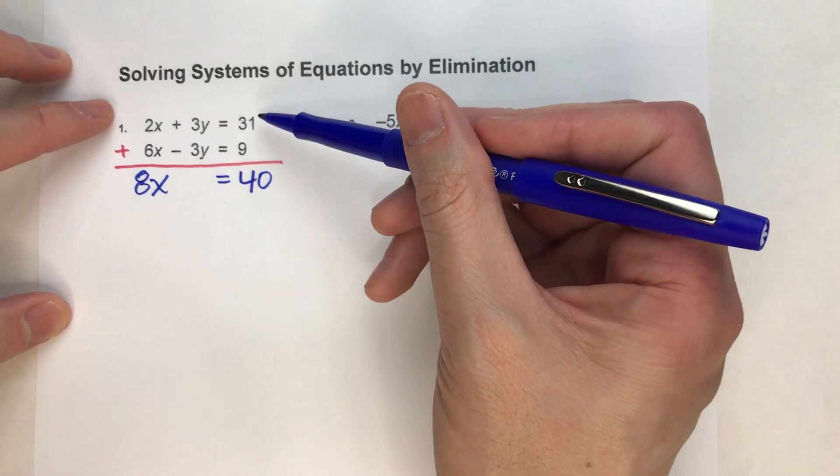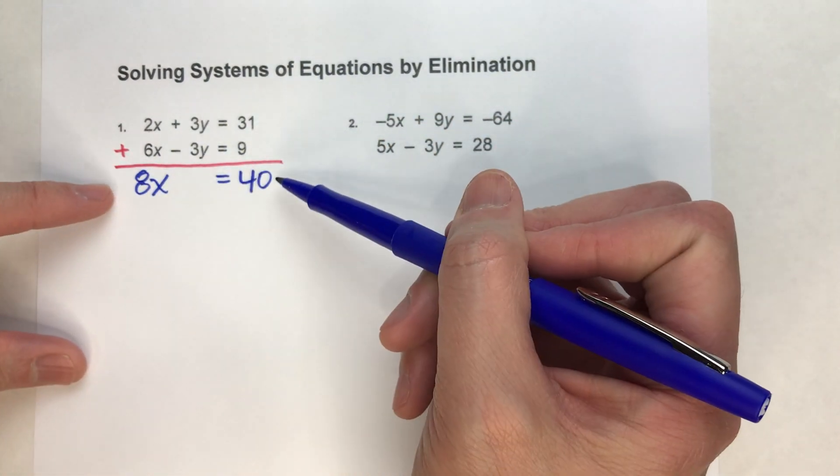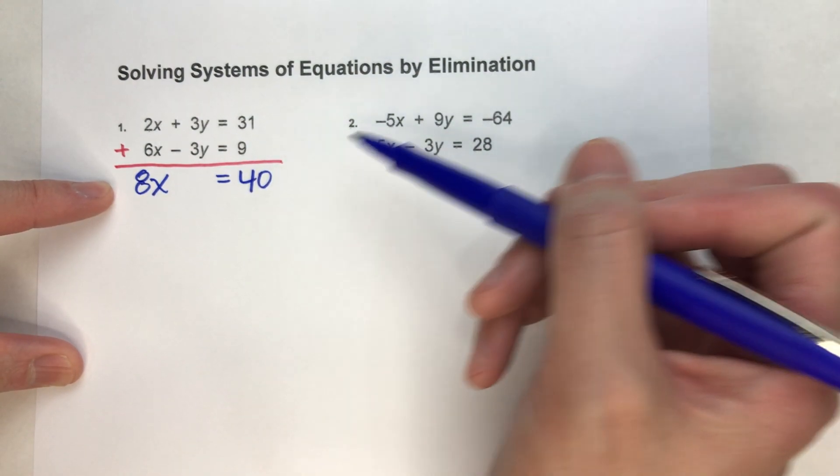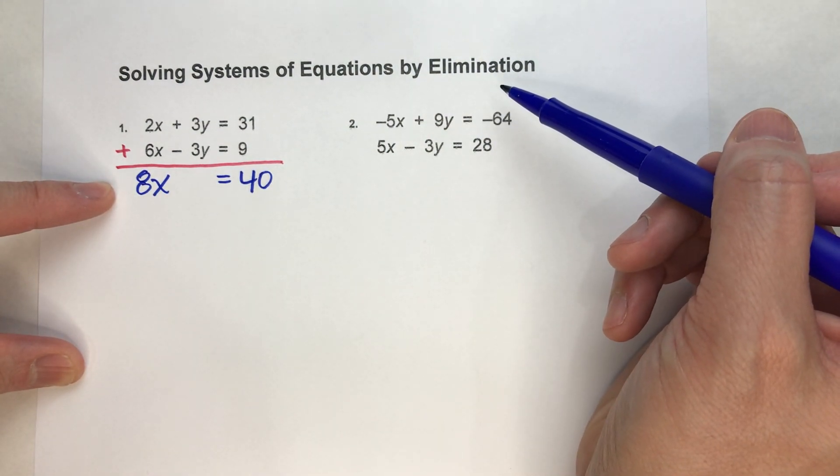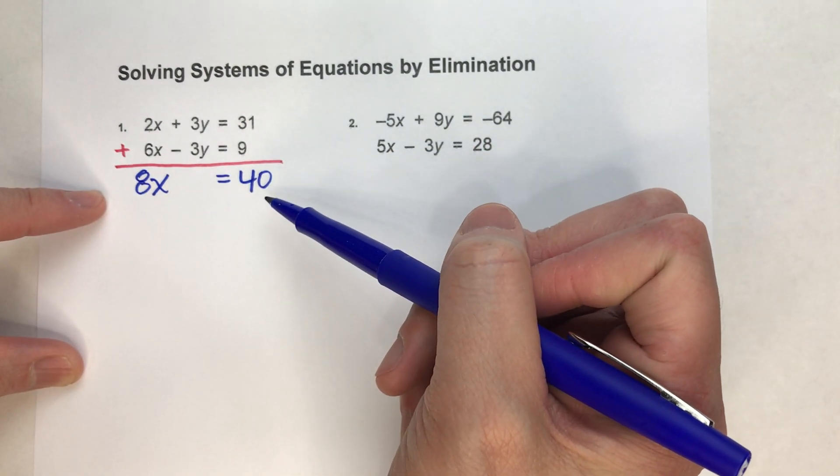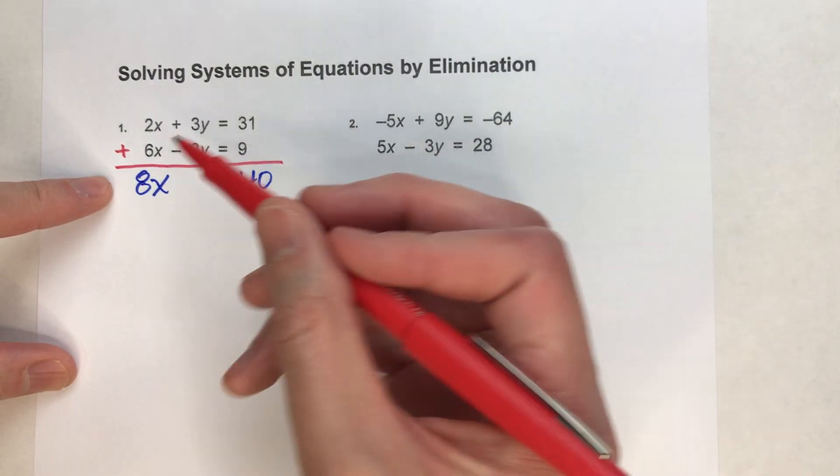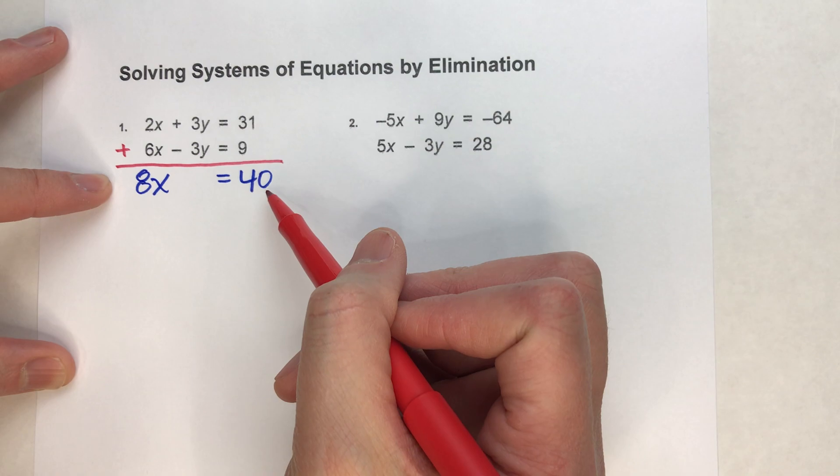By adding the two equations together, we've completely eliminated the y's from the equation. That's why it's called the elimination method, because by adding them together, we eliminate one of the variables, and now we can solve for the other one. So now we need to solve for x. We've got 8x equals 40.